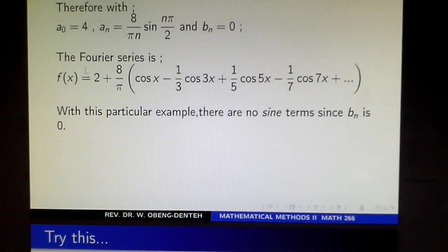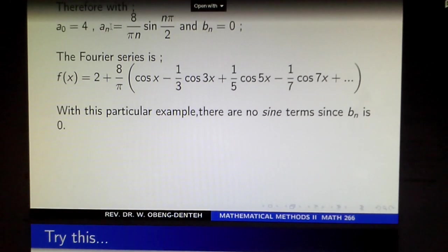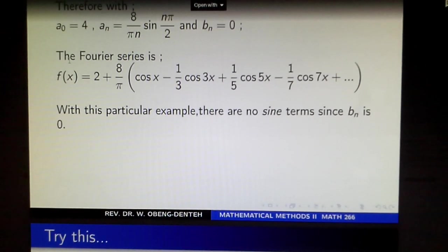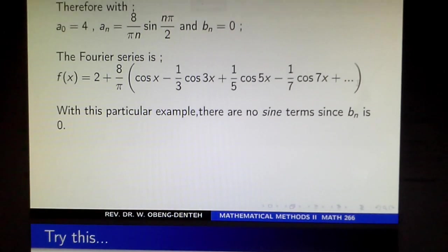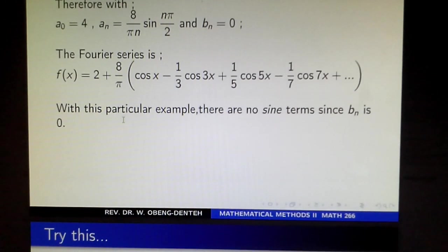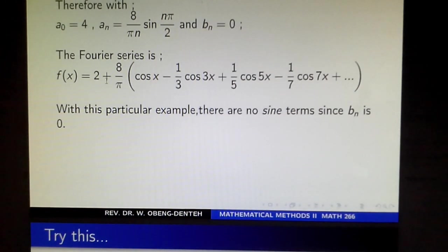Therefore, with the values obtained, we have a_0 = 4, a_n = (8/nπ)sin(nπ/2), and b_n = 0. The Fourier series becomes f(x) = 2 + (8/π)(cos x - (1/3)cos 3x + (1/5)cos 5x - (1/7)cos 7x + ...). Notice there are no sine terms since b_n = 0.